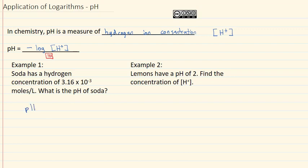Using our formula that pH is equal to the negative log of the hydrogen ion concentration, we'll plug in the fact that we know the concentration is 3.16 times 10 to the negative third.